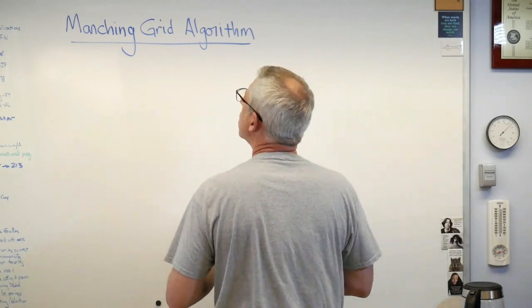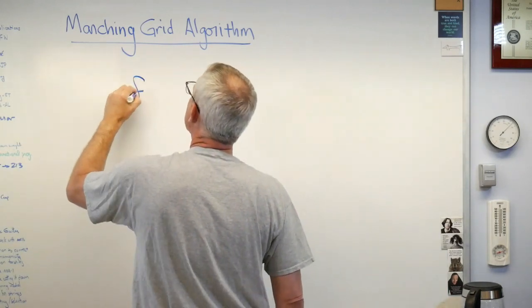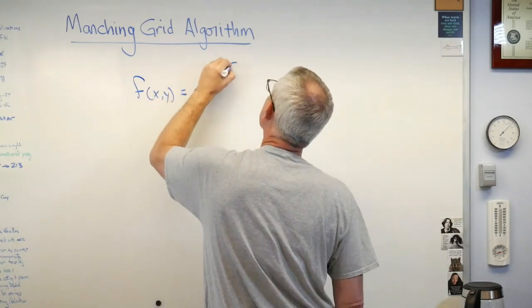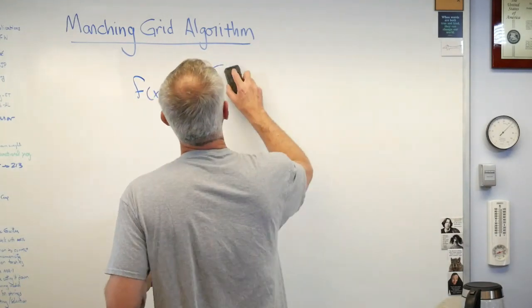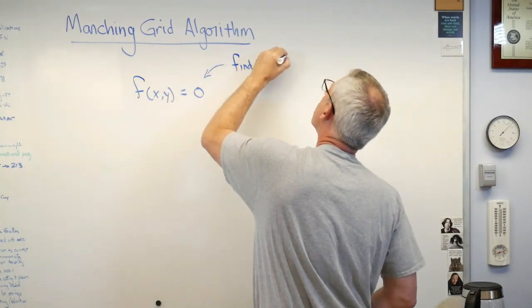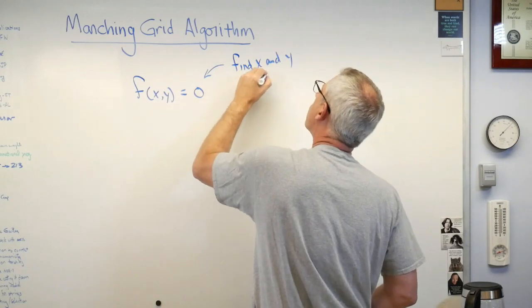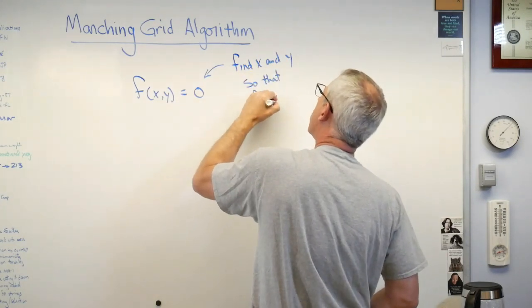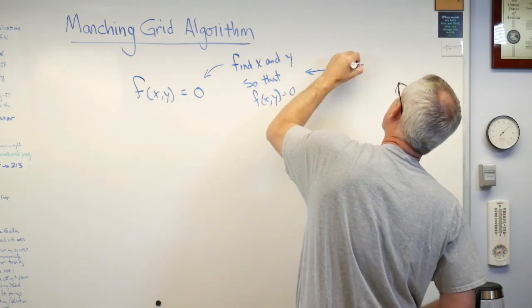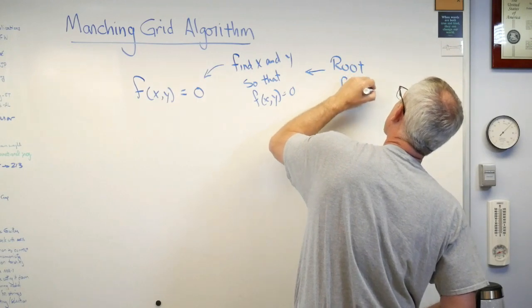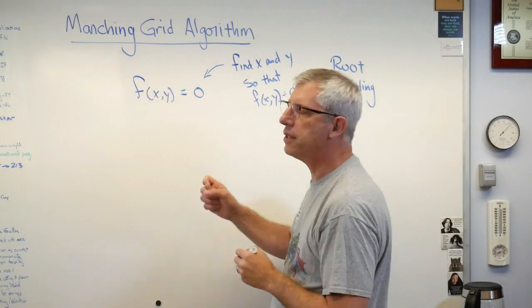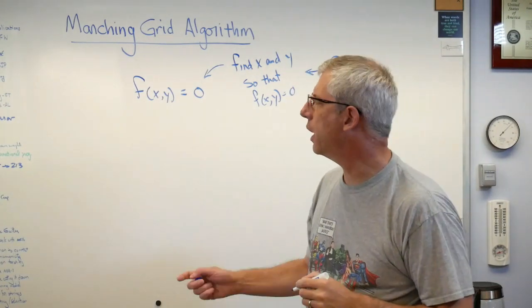Well, say I have a function f(x,y) - it doesn't matter what it is - and I want to find x and y so that f(x,y) equals 0. That's root finding. That's what that means.